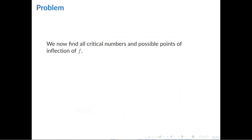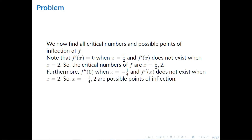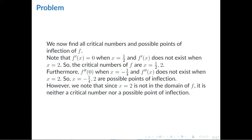Next, find all critical points and possible points of inflection. f prime(x) equals 0 when x equals 1/2, and f prime does not exist when x equals 2. f double prime(x) equals 0 when x equals negative 1/4, and f double prime does not exist when x equals 2. However, since x equals 2 is not in the domain, it is neither a critical number nor a possible point of inflection.